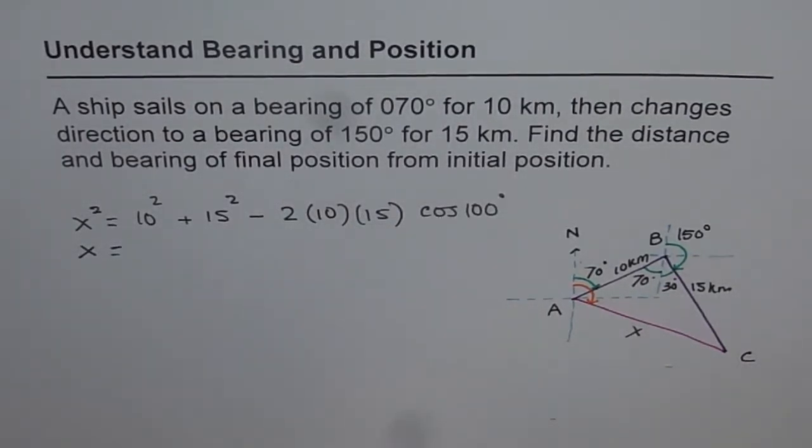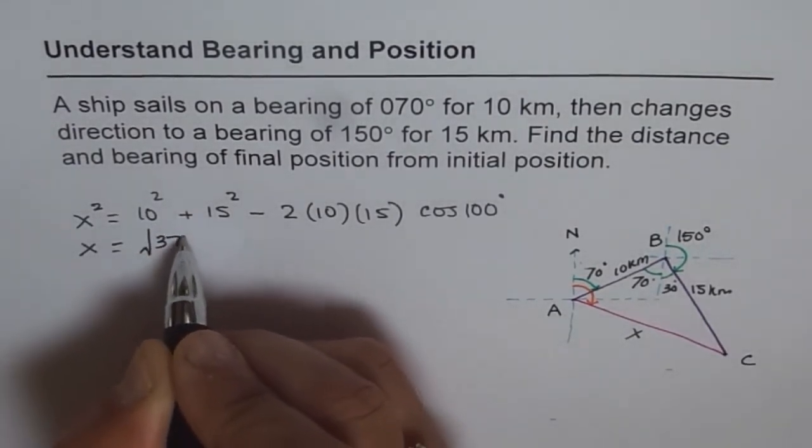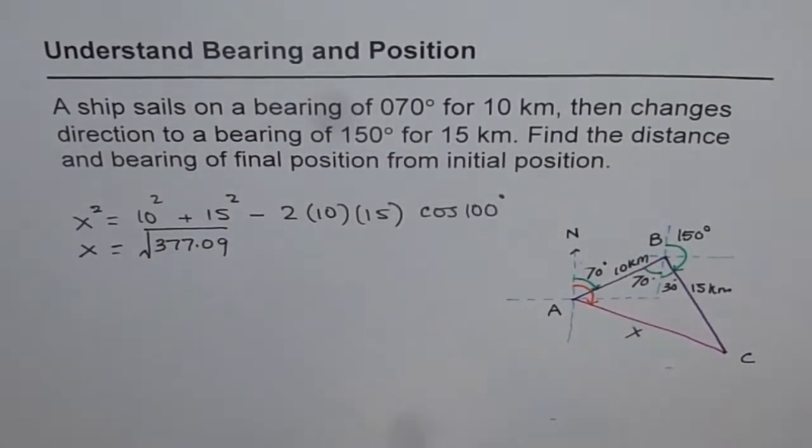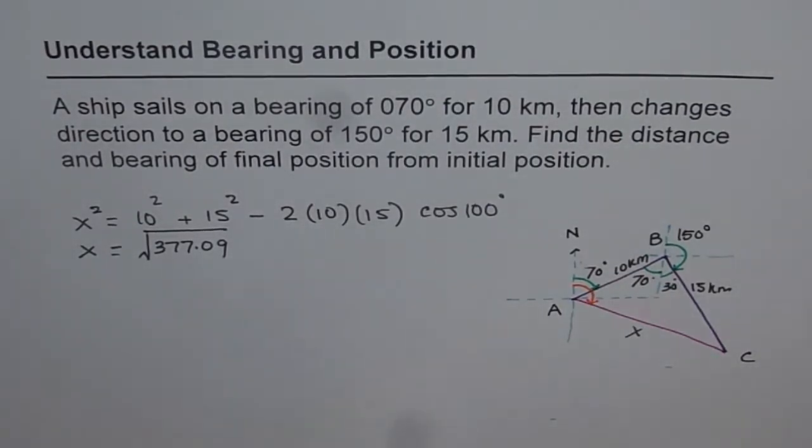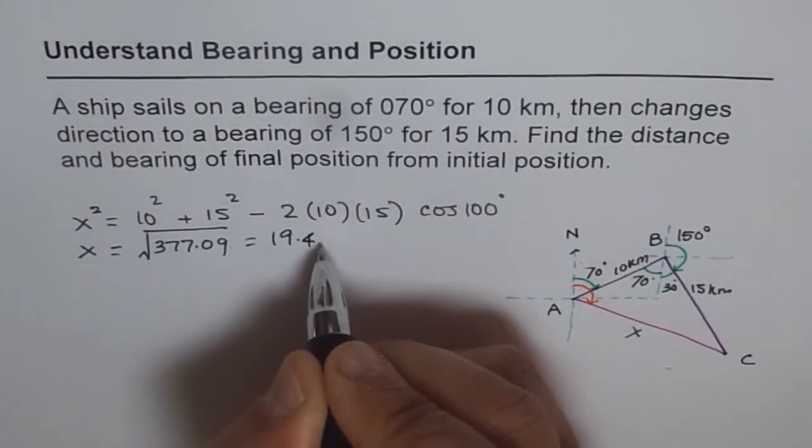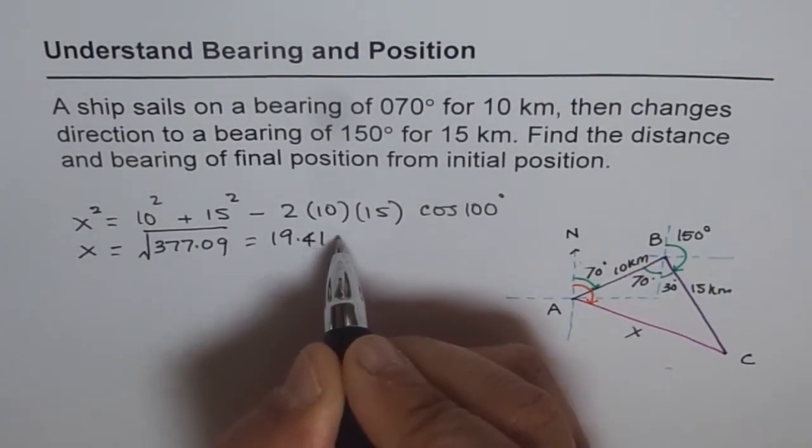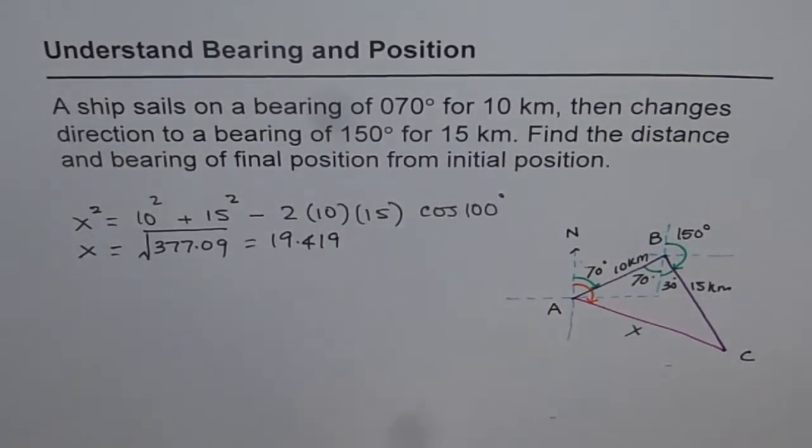So you can use your calculator now and calculate this answer. So X will be equal to the square root of all this. So let's use the calculator and calculate this answer. So it is 10 squared plus 15 squared minus 2 times 10 times 15 times cosine of 100. It is 377.09, so I will do square root of 377.09, and then we get 19.418. So let me write three decimal places now. So we will just write three decimal places and now we know X.